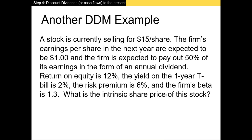In this next example, a stock is currently selling for $15 per share. The firm's earnings per share next year are expected to be $1 and the firm is expected to pay out 50% of its earnings as an annual dividend. The ROE is 12%, the yield on the one-year T-bill is 2%, the risk premium is 6%, and the firm's beta is 1.3. Let's move over to Excel to answer this.